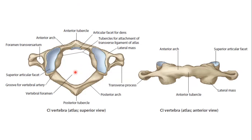Now for the atypical vertebrae — C1, C2, and C7. First, C1, which is known as the atlas. Look at its shape: it has no body and no spine. It is ring-shaped. So identification: ring-shaped, no spine, no body — and of course the foramen transversarium is present. This is how you identify the C1 vertebra.